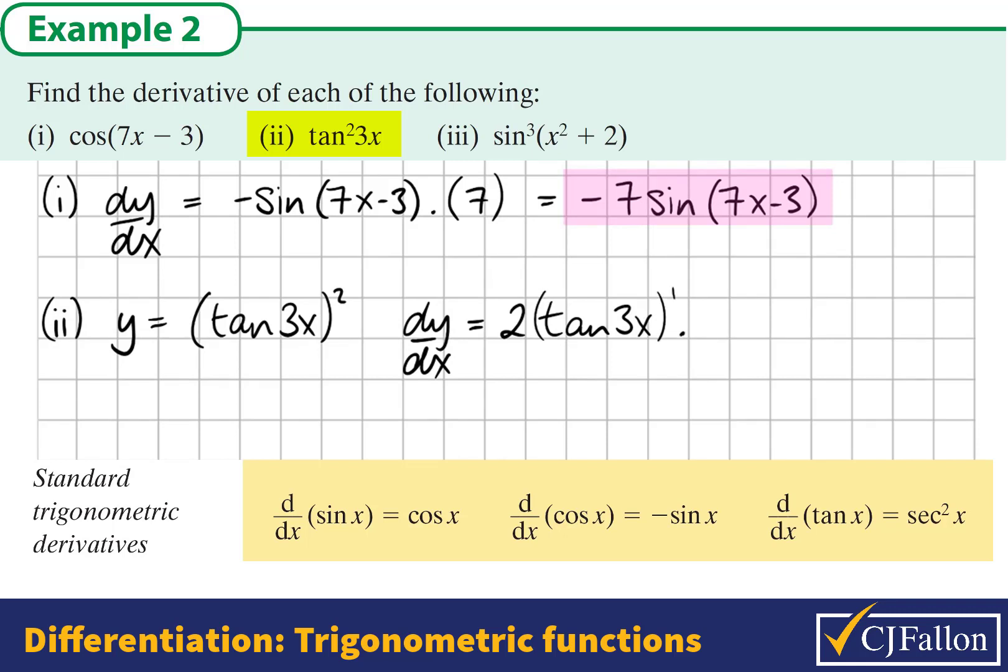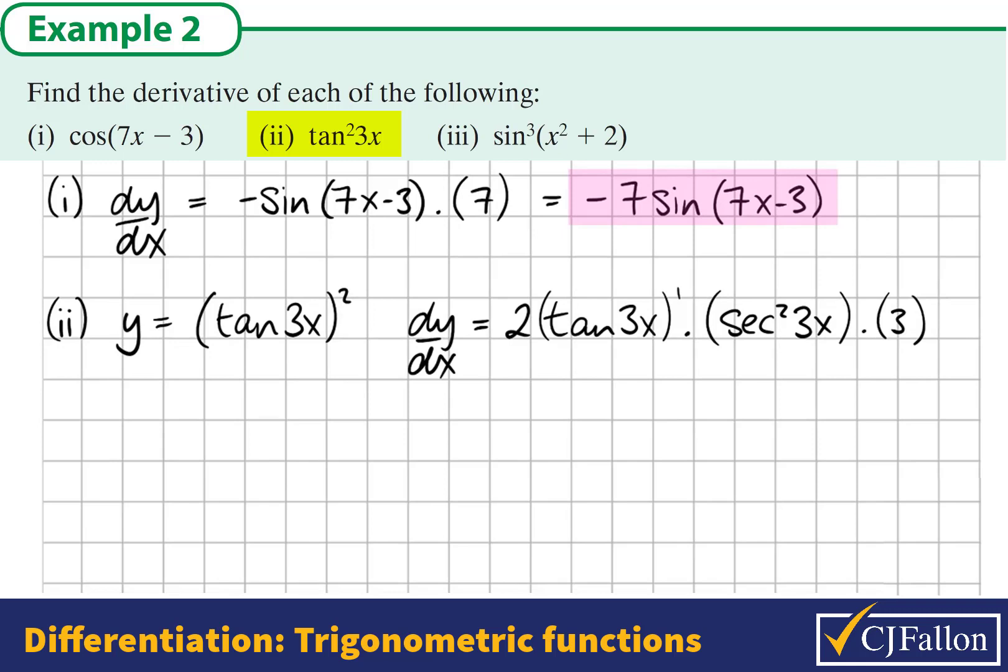Tan of an angle turns into sec squared of the angle, so it becomes sec squared 3x. Multiply this by the derivative of the very inside bit, the angle itself, which is 3. That's our solution. We can neaten it up because two 3's are 6, giving us 6 tan 3x sec squared 3x.